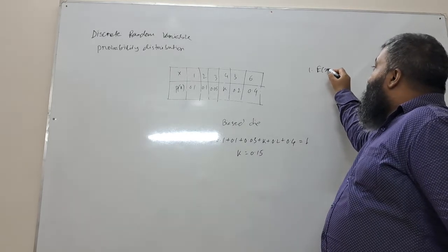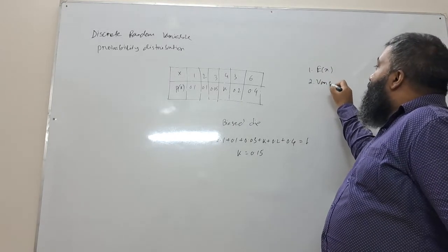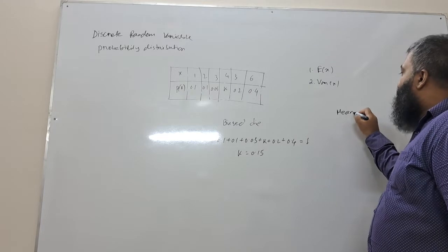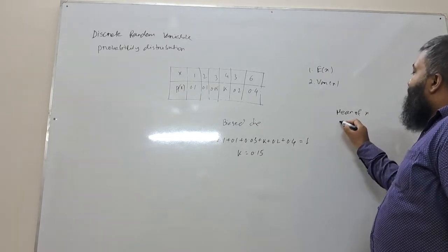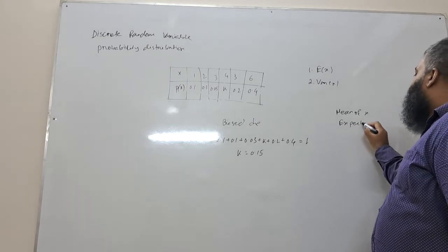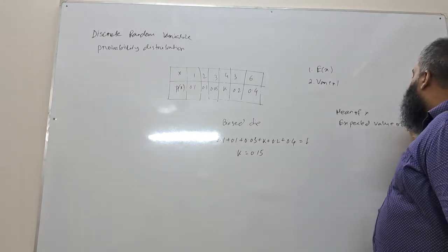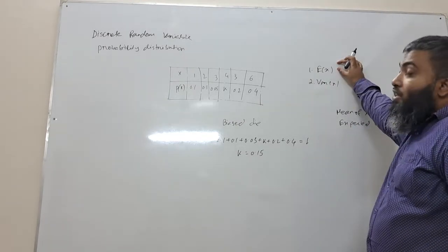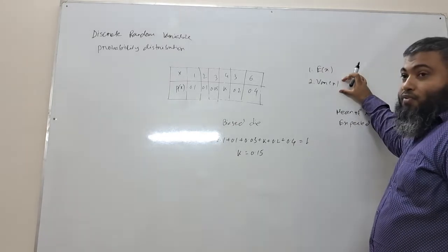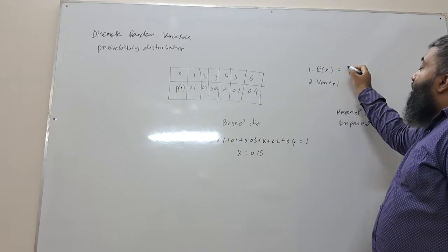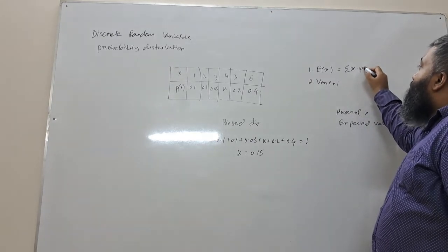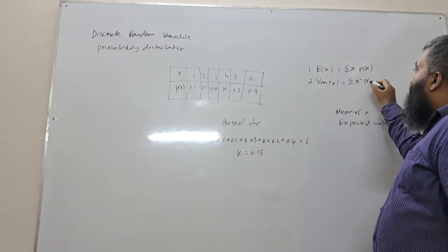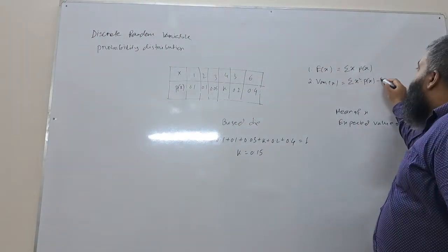For variance of x. The mean of x, or expected value of x. The formula is summation of x into P(x). Variance of x formula is summation of x squared into P(x) minus x bar squared.